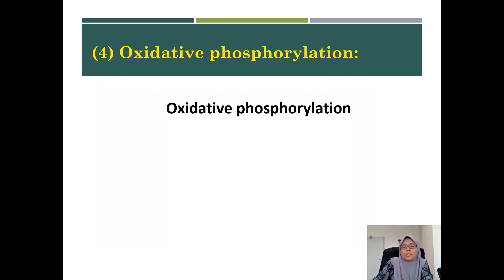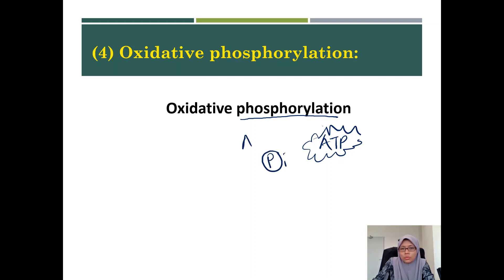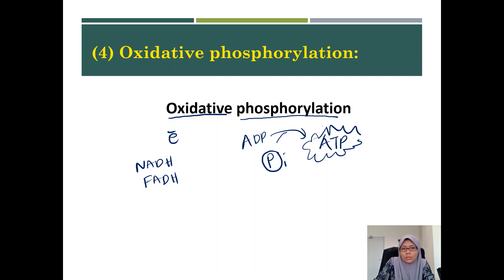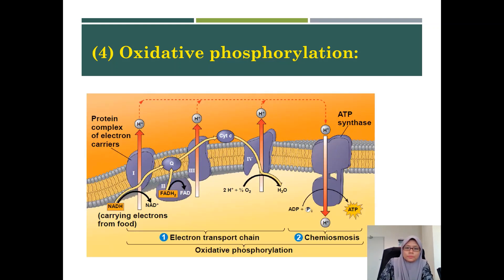Let's look at the term first. Phosphorylation means production of ATP — the process of generating ATP by adding inorganic phosphate to ADP to produce ATP. This formation occurs through the process of oxidation, which is the transfer of electrons from NADH and FADH2. These two electron carriers transfer their electrons through oxidation, which generates the ATP. There are two mechanisms involved in oxidative phosphorylation: number one, the electron transport chain, and number two, chemiosmosis.